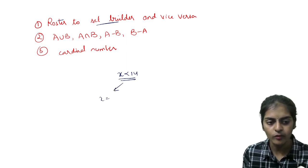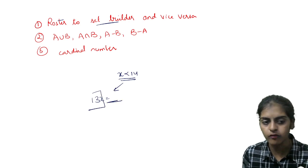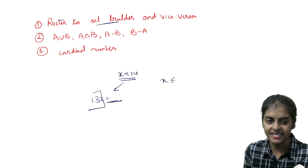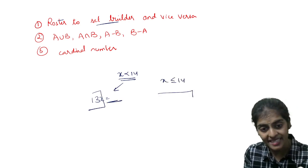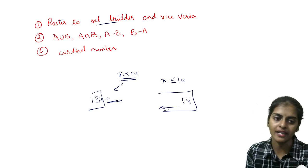So I need to write only till 13, so I cannot take 14. If I write x less than or equal to 14, which means I can take 14 also and less than 14 values.